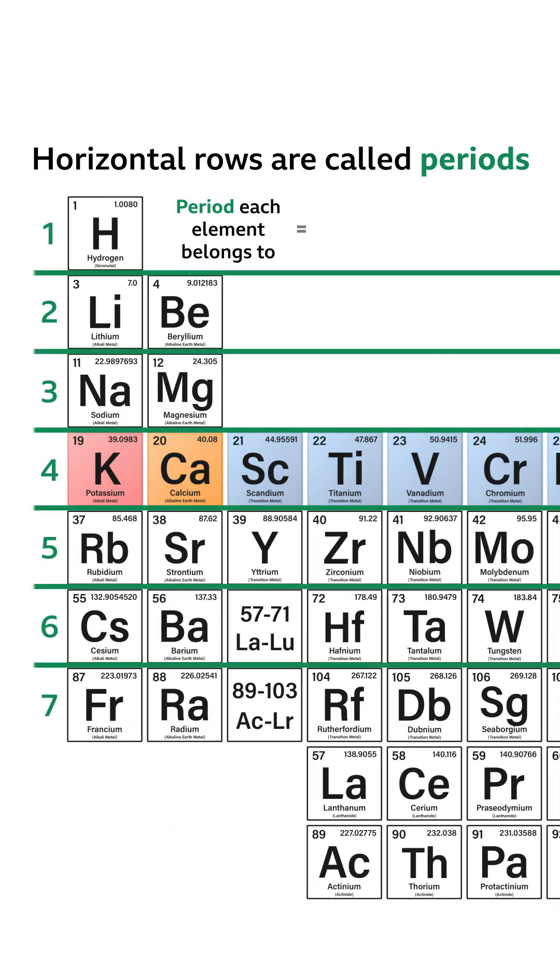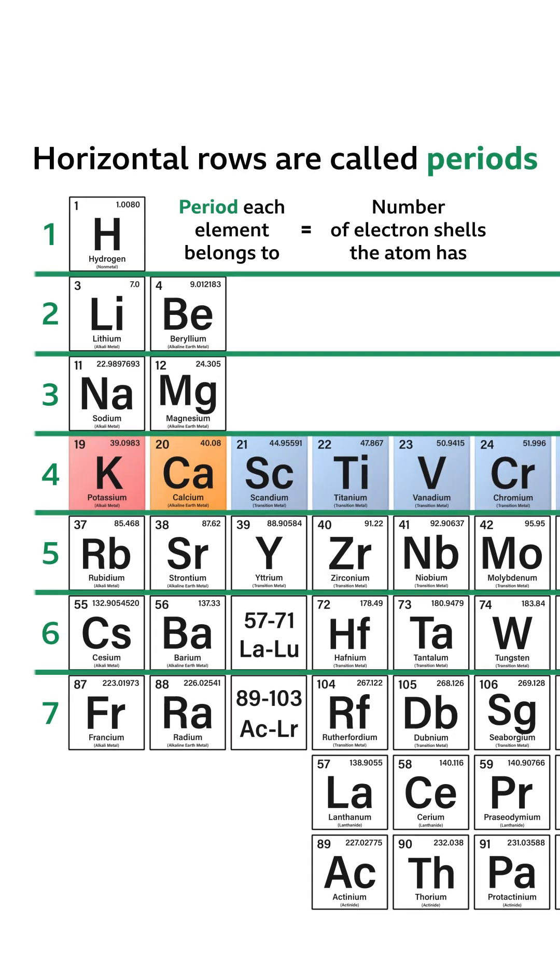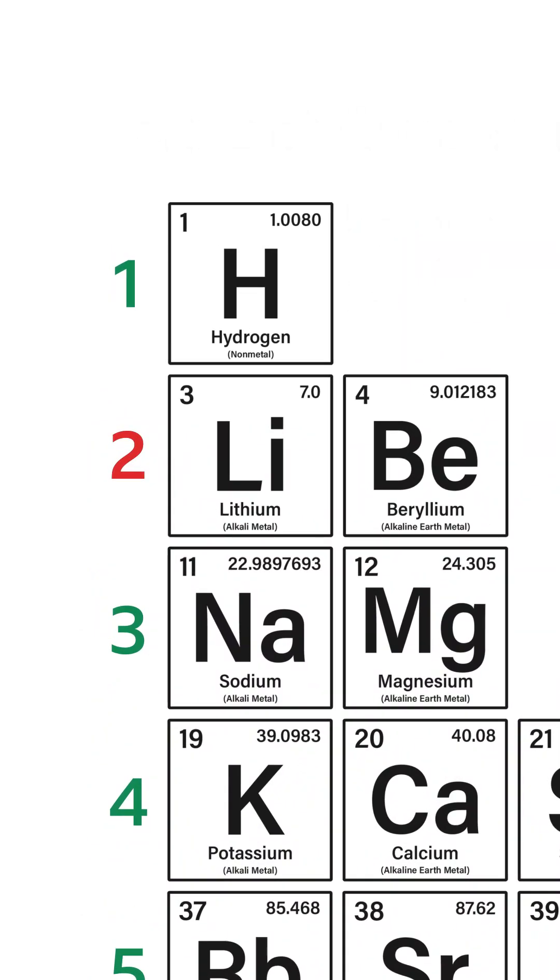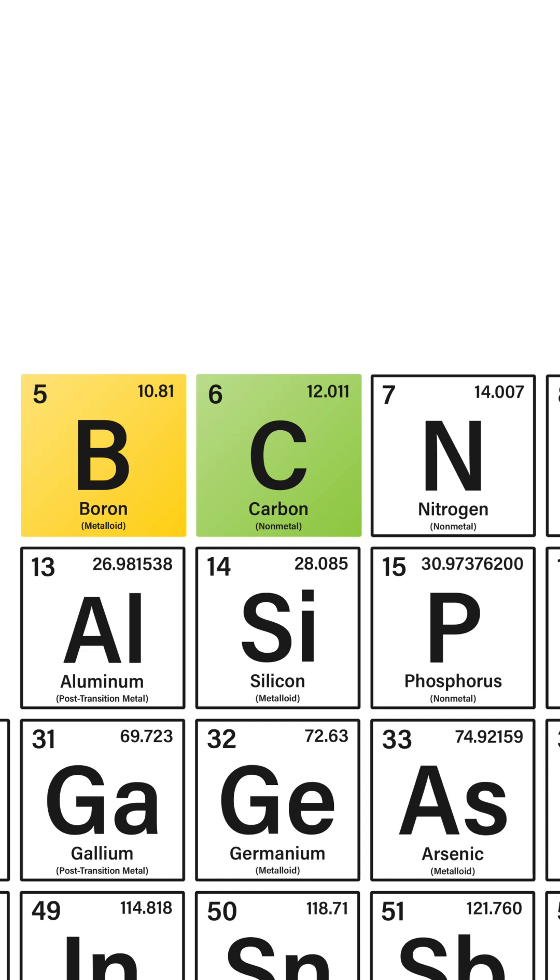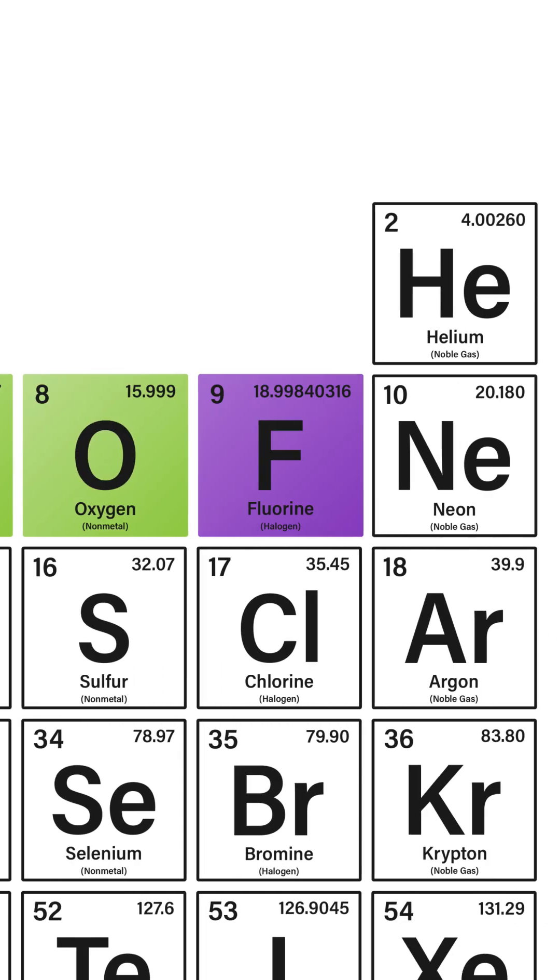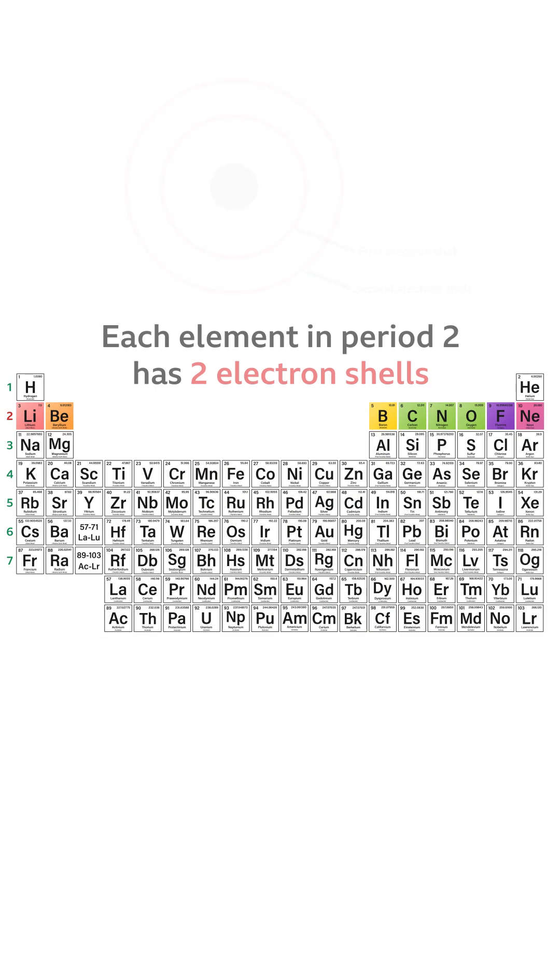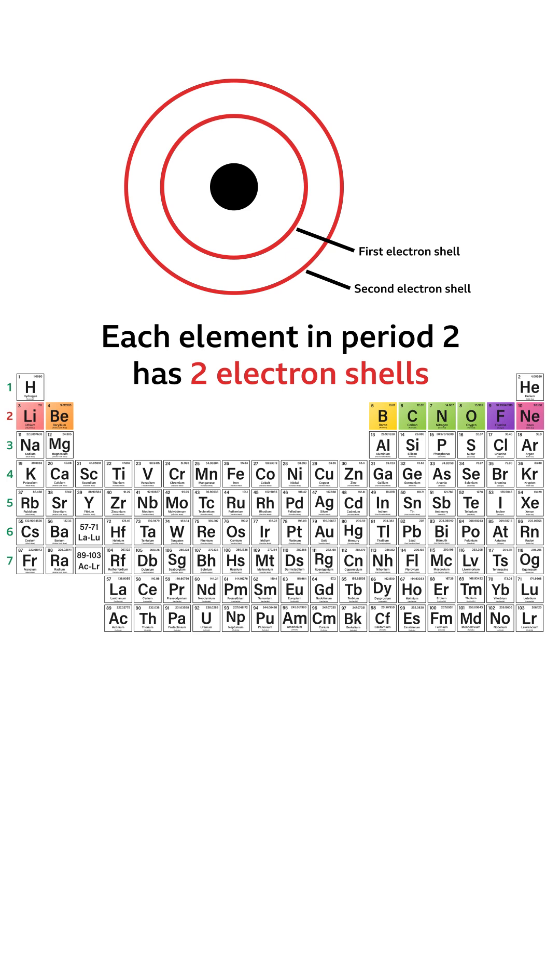And the period that each element belongs to represents the number of electron shells that the atom has. So for example, the second row down, or period two, is lithium, beryllium, boron, carbon, nitrogen, oxygen, fluorine, and neon. And each of these elements has two electron shells.